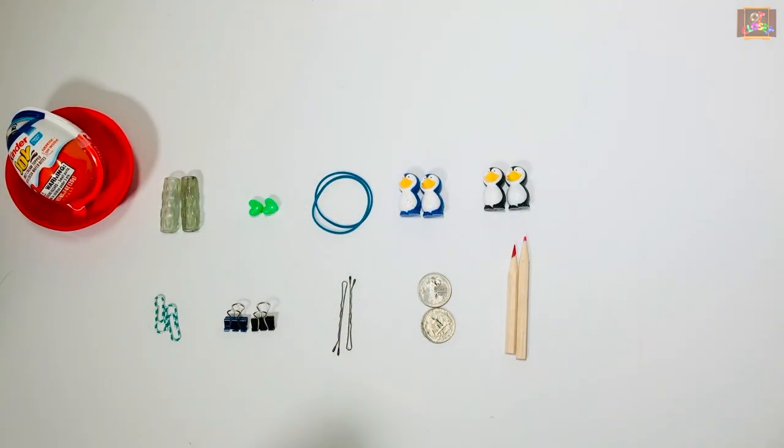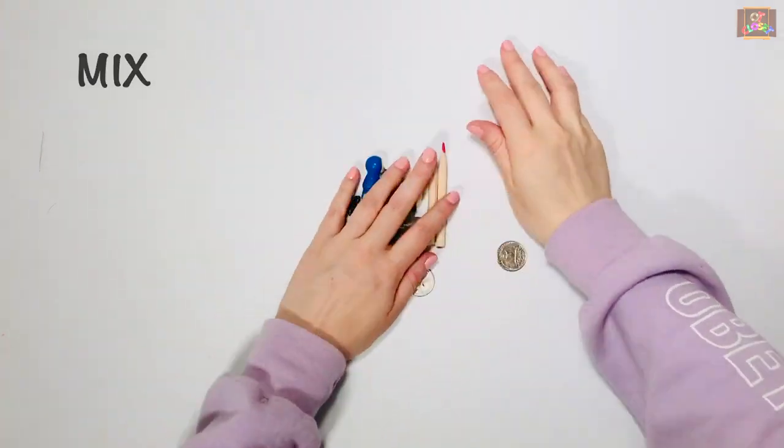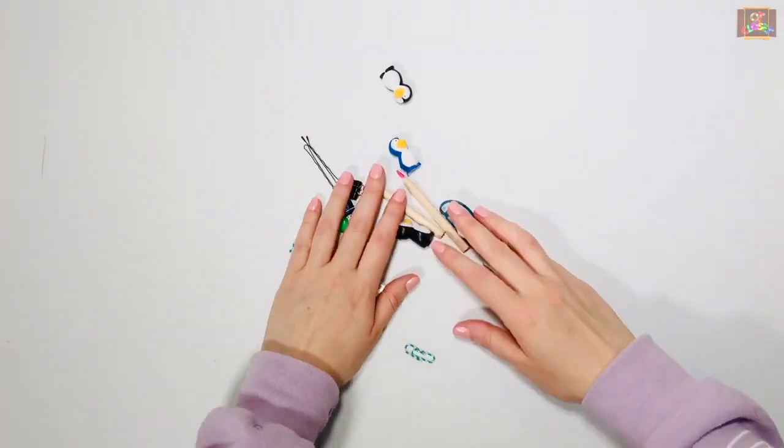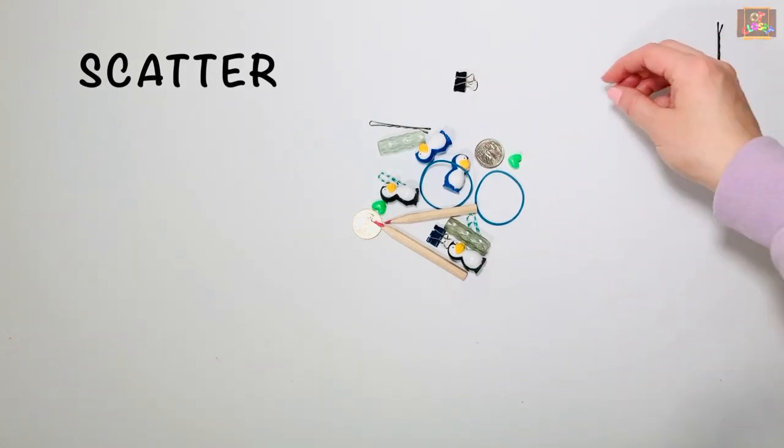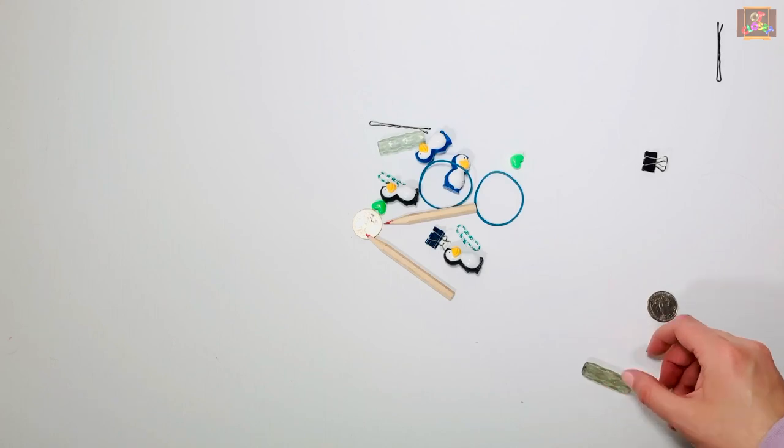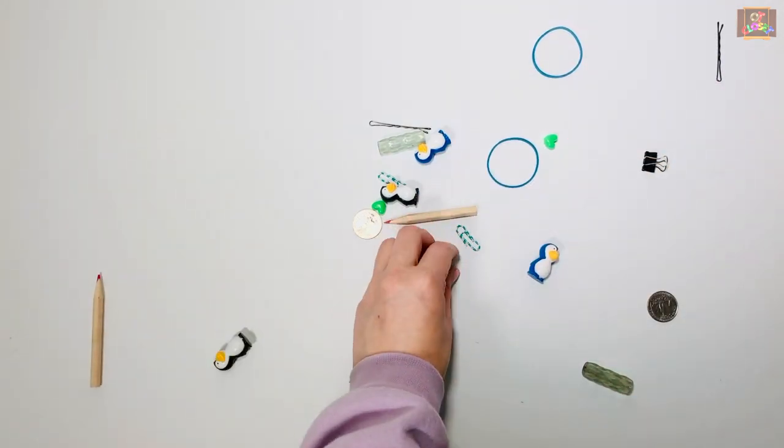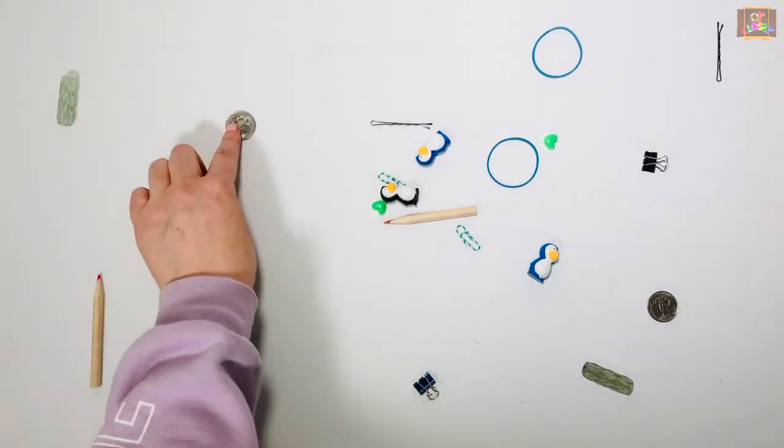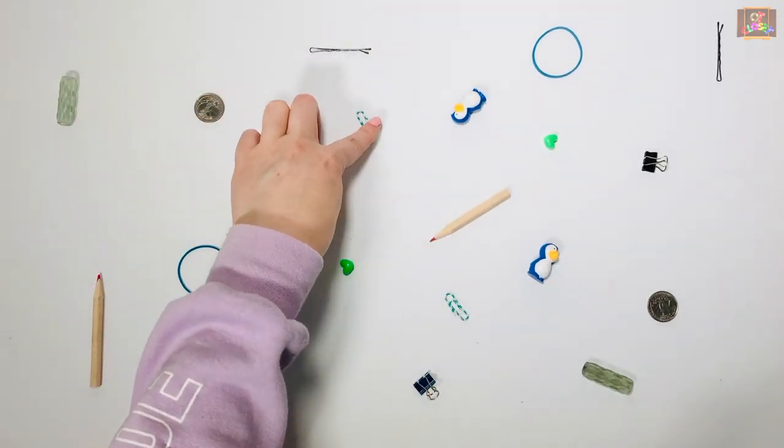We're gonna open the kinder egg when we're done. Let's use both hands and mix our toys. Scatter your toys on the table so they're further apart from each other.